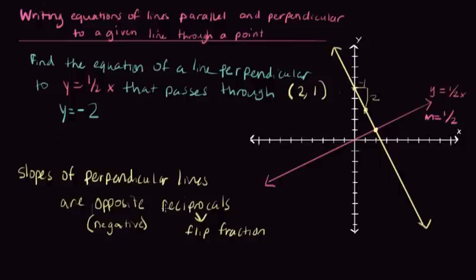So the opposite reciprocal here was that slope was going to be negative 2 over 1, which is also just negative 2. So y equals negative 2x plus b. And then you can use this point, x, y, plug those in for x and y over here.